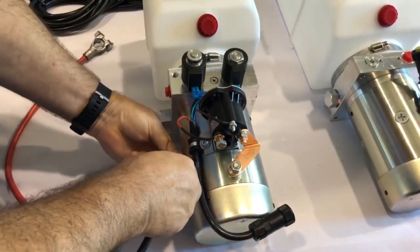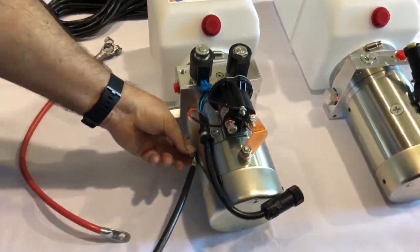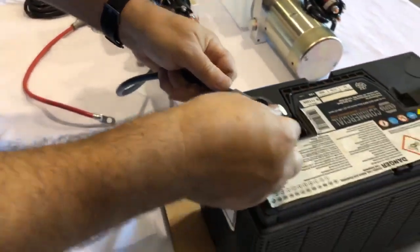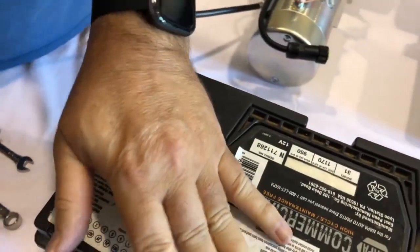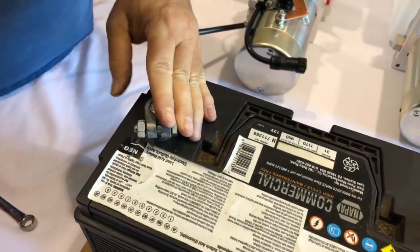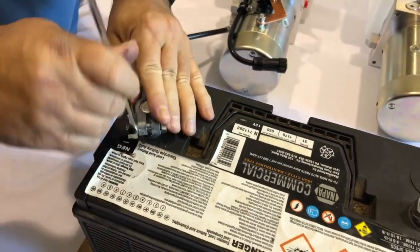Now using a 10 millimeter wrench, connect the negative battery cable eyelet to the grounding screw on the motor housing. And then of course you can go ahead and connect the other end to the battery if you'd like.